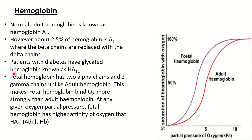Patients with diabetes have glycated hemoglobin, known as hemoglobin A1c — we will discuss more on diabetes in upcoming videos. There is also a difference between adult and fetal hemoglobin: fetal hemoglobin has two alpha chains and two gamma chains instead of beta chains. This makes fetal hemoglobin bind oxygen more strongly than adult hemoglobin at any given oxygen partial pressure — it has a higher affinity for oxygen, as seen in the sigmoidal oxygen-dissociation curve.